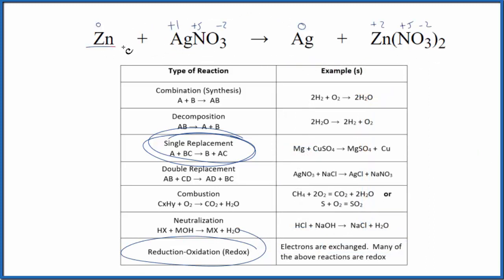we would see that zinc, it's a free element, so it has an oxidation state of zero. It comes over here, loses two electrons, becomes a plus two. The silver, plus one, it gains an electron, becomes Ag with an oxidation state of zero since it's a free element. So it's also a redox reaction where electrons are changed.